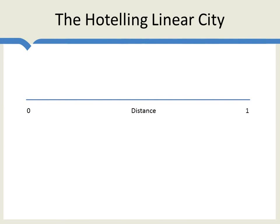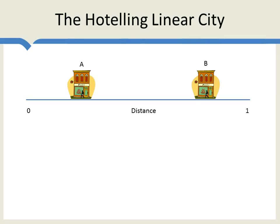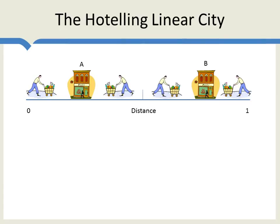We begin with Harold Hotelling's 1929 linear city model. Hotelling said, let's think about Main Street USA. Here's one end of Main Street — let's call this zero. Here's the other end, one. Let's imagine that firms selling similar products locate at A and B along Main Street. The firms are selling similar products, so customers are going to shop at the firm which is closest to them. Customers located to the left of firm A will shop at A, customers to the right of firm B will shop at B, and they'll split the customers in the middle.